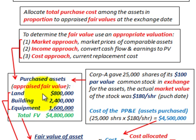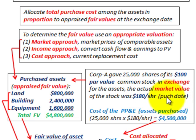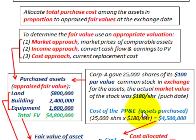For our example, Corporation A is going to buy some land, some building, and some equipment, all for one lump sum price. Corporation A is going to give 25,000 shares of its $100 par value common stock in exchange for the assets. We have to establish a cost — the lump sum cost or price we're paying for these assets. So our cost of property, plant, and equipment is determined by those shares.